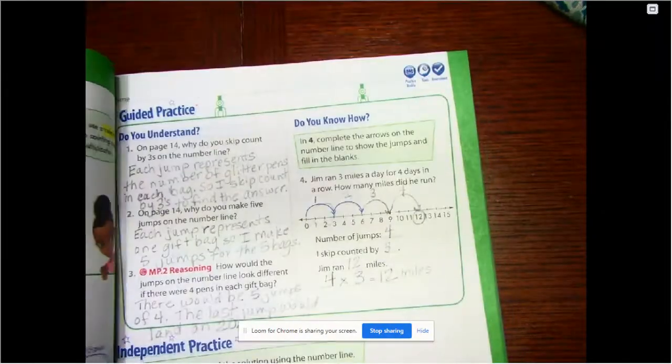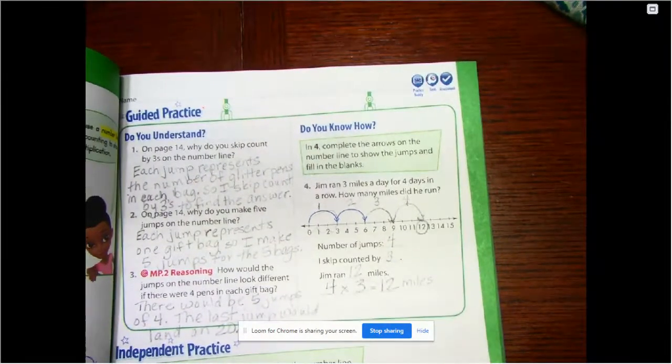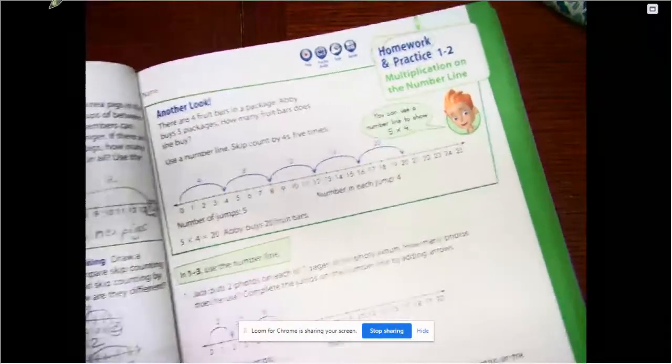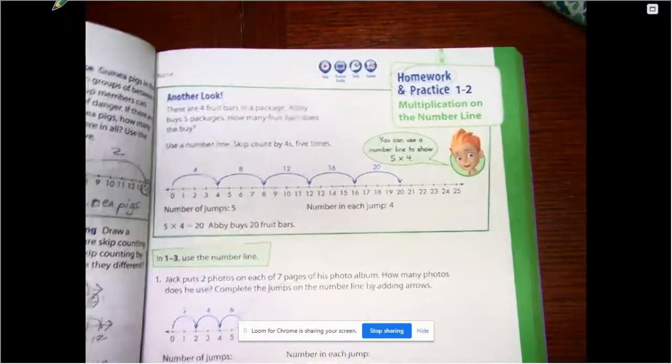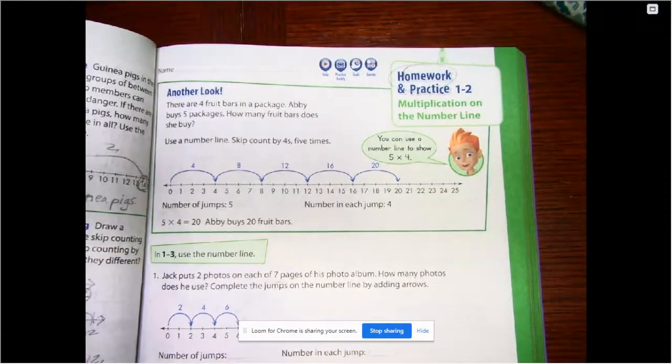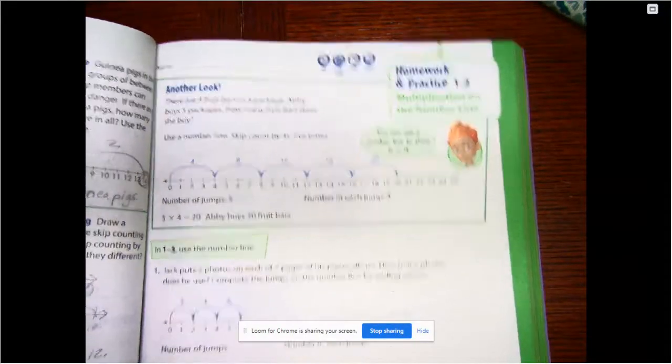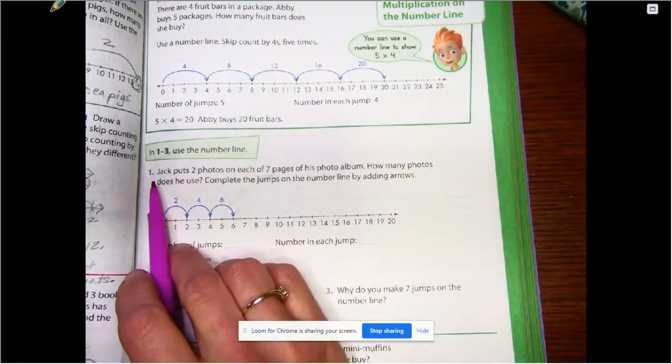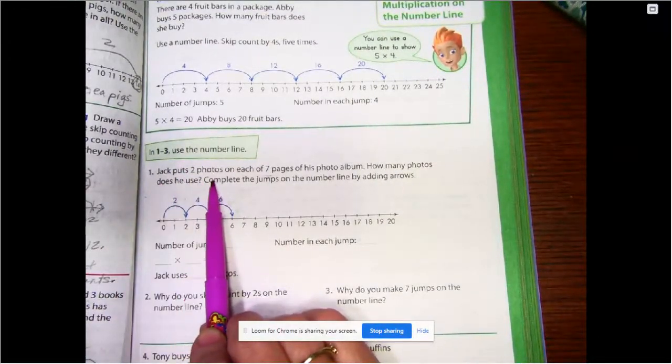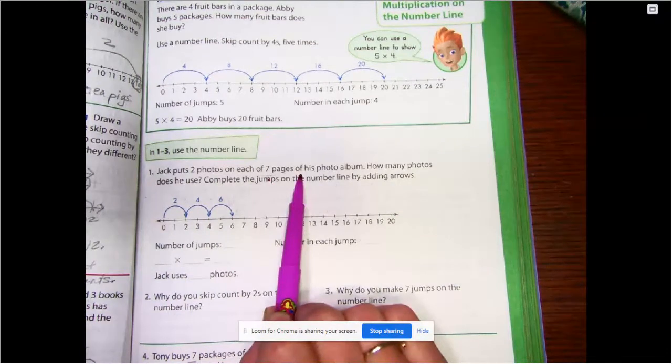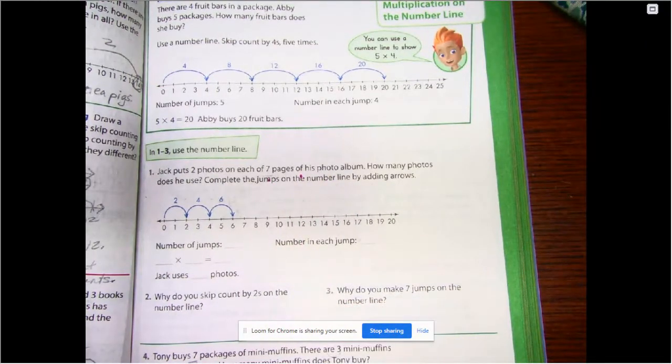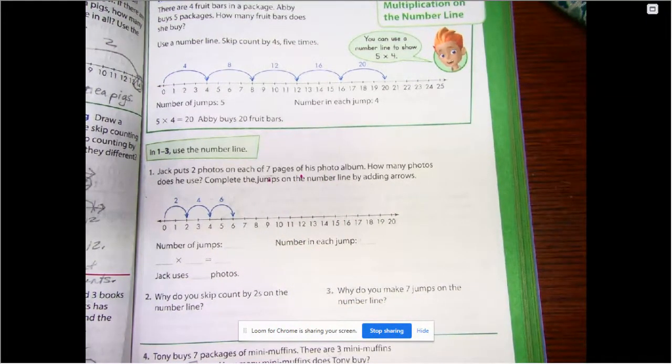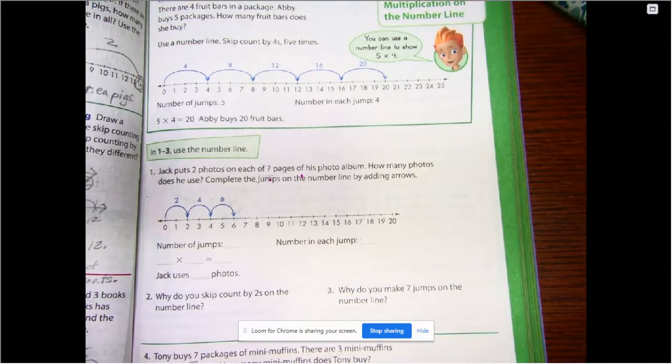Let's go to lesson 1.2. And so we already did the lesson part. So we're just correcting the homework. So grab a pencil or a pen so you can make your corrections if you need to. All right, it says number 1, Jack puts two photos on each of seven pages of his photo album. How many photos does he use?